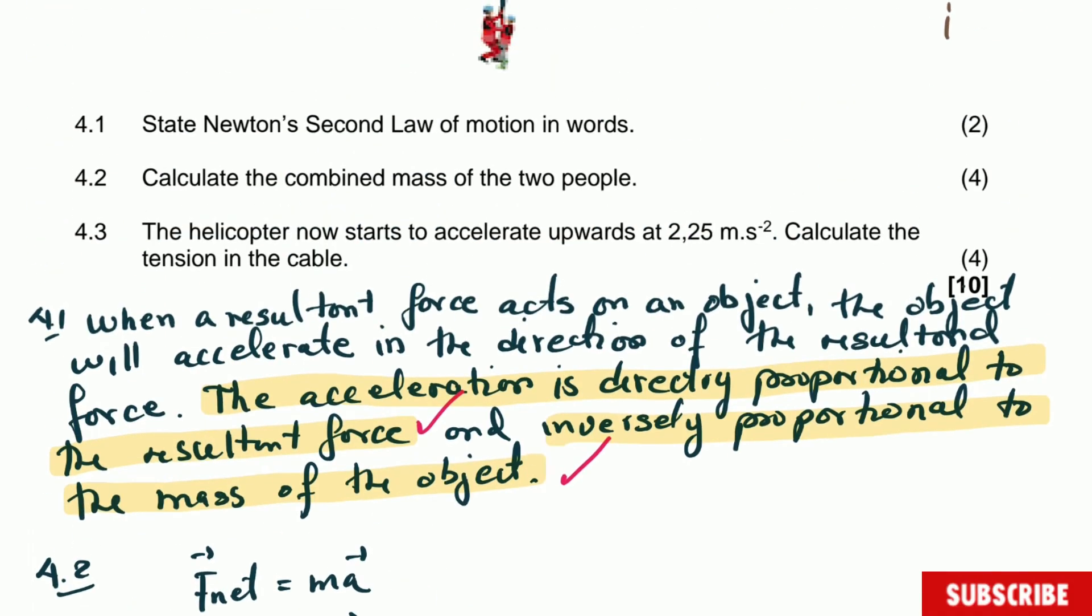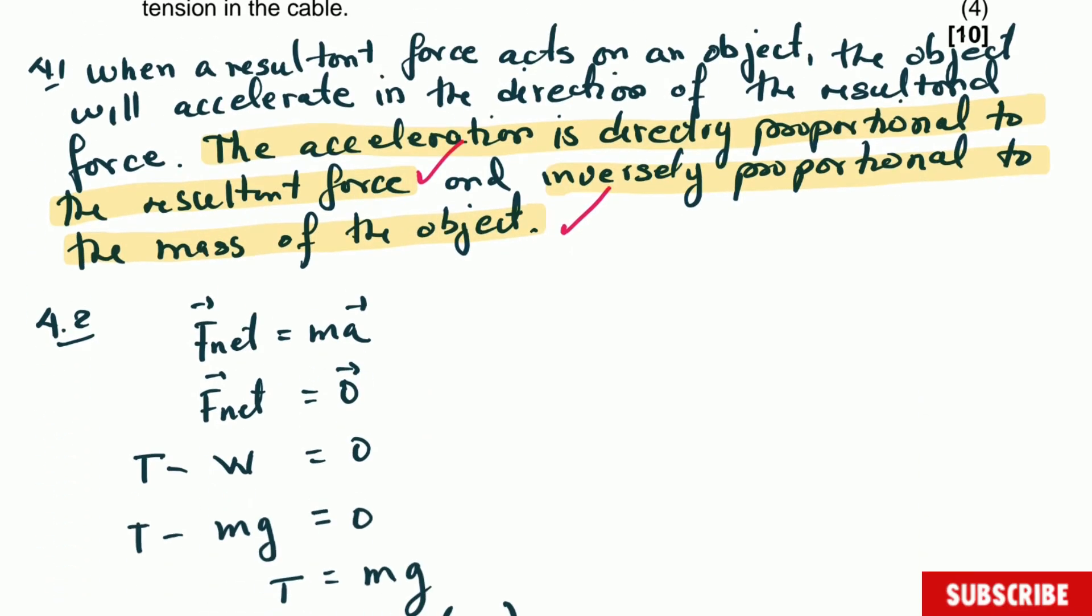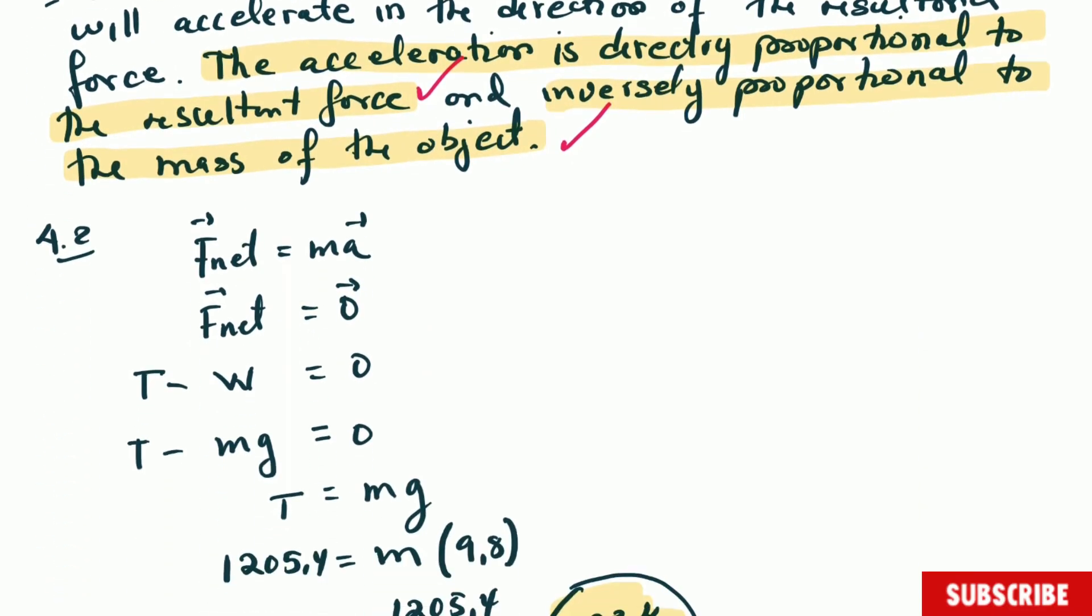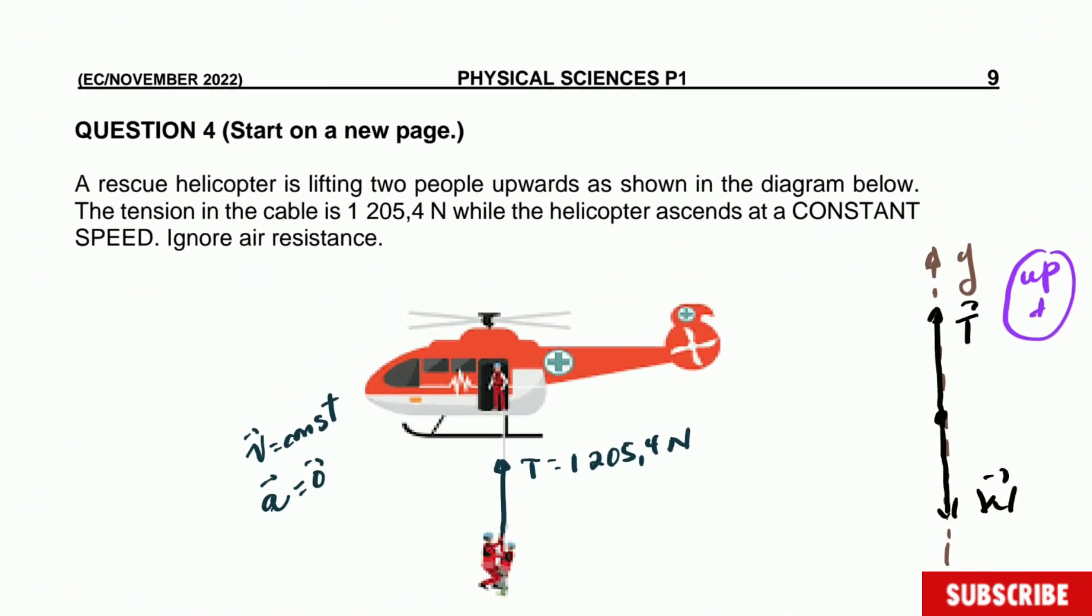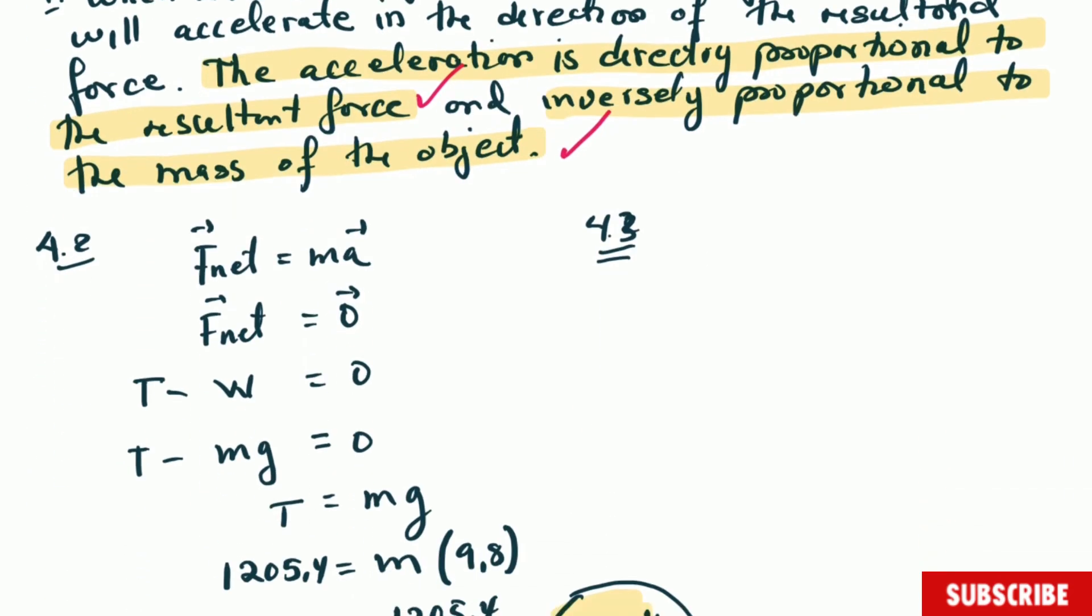Question 4.3: The helicopter now starts to accelerate upward at 2.25 meters per second squared. Calculate the tension in the cable. It's similar, the only difference is that now we're supposed to apply Newton's second law. This doesn't change anything from the free body diagram, so we're going to keep it. The only difference would be that now the tension will be slightly bigger than the weight.